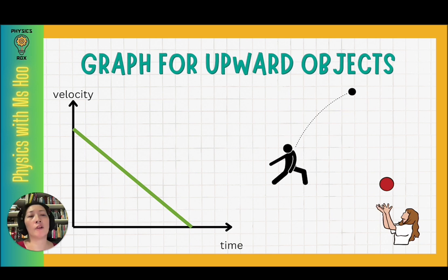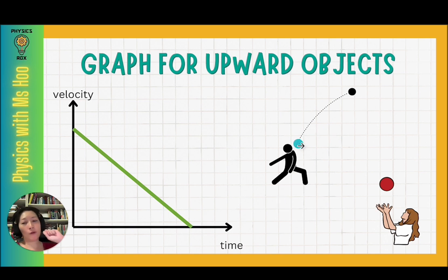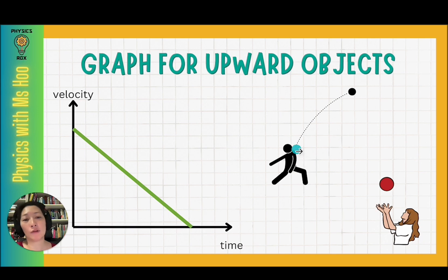Sometimes you might encounter a graph for objects thrown upwards. I have a velocity-time graph here — this is also the same shape for speed-time graphs. Normally when studying acceleration we use velocity because it is a vector. When an object is thrown upwards, the initial velocity is not zero — you apply a force making the object move. As the object moves upwards it slows down, comes to a brief stop, then falls down again.